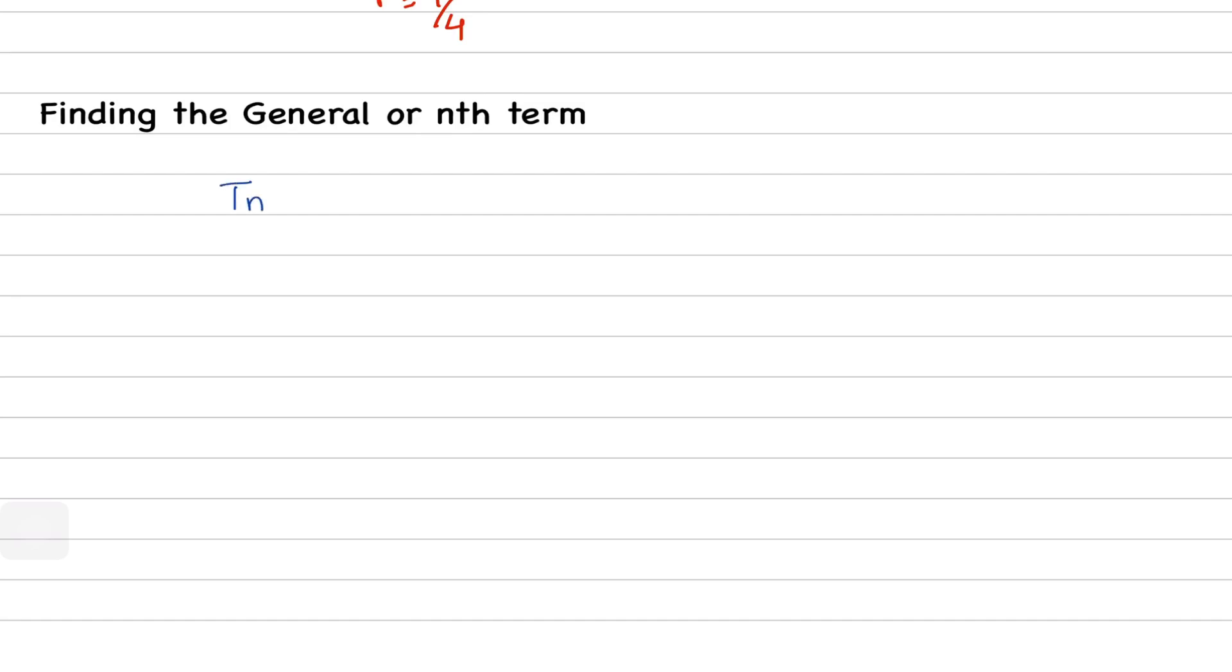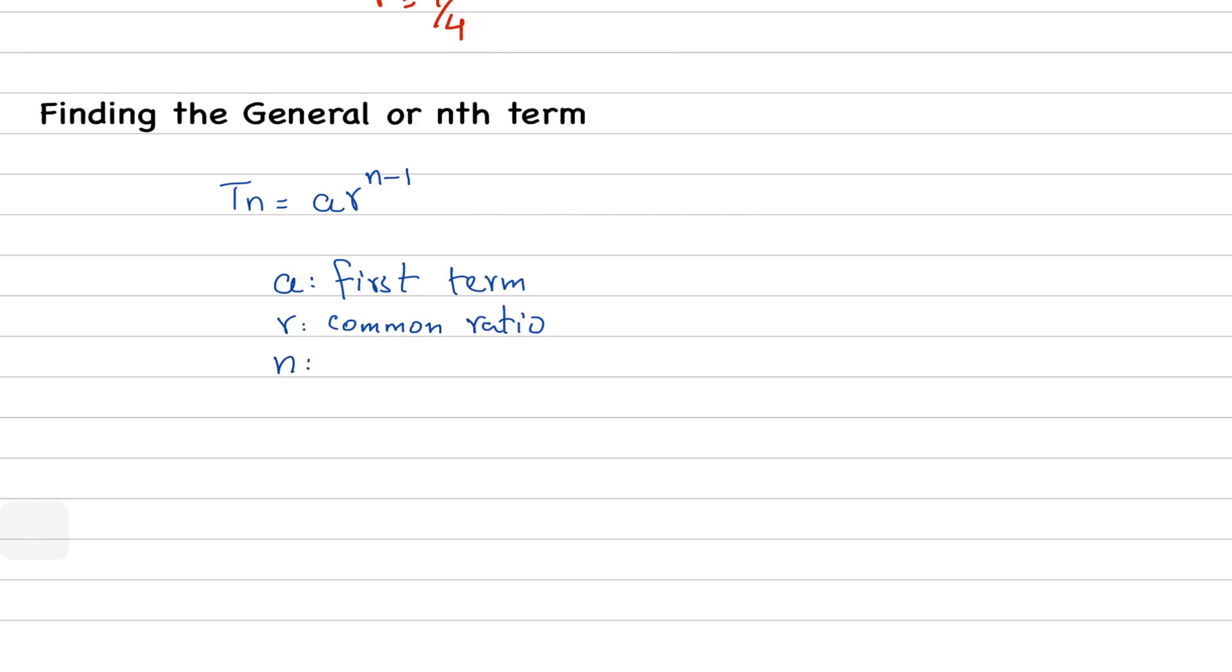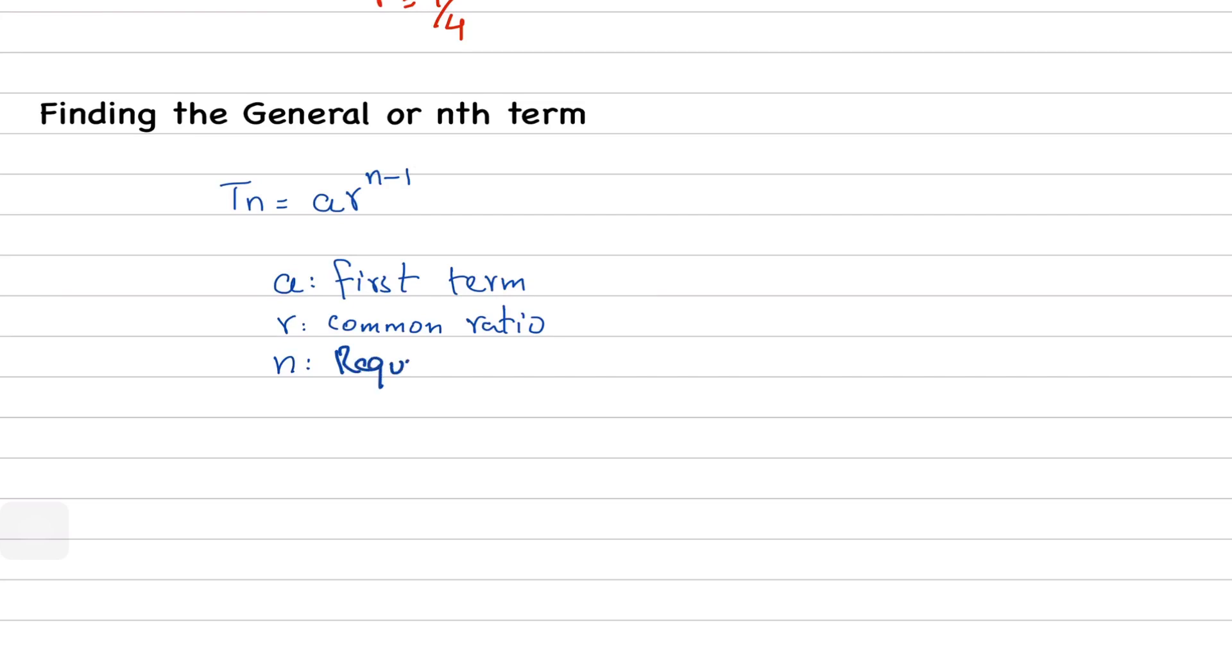And that formula is Tn equals a times r raised to the power n minus 1. Now, what is a here? a is the same thing in arithmetic progression and that is the first term, and r is the common ratio, and n here is the required term.